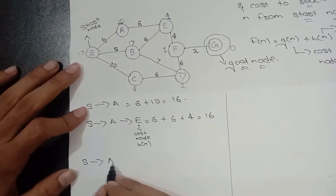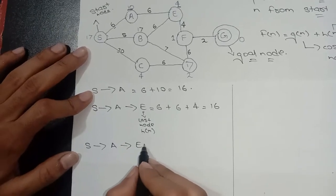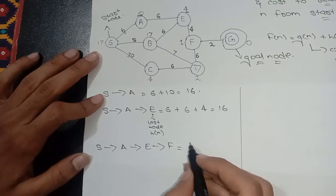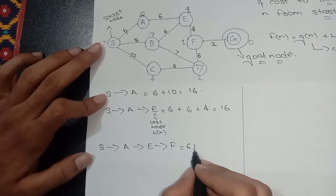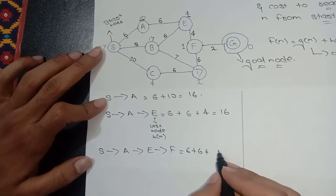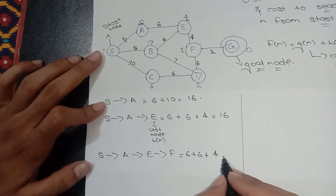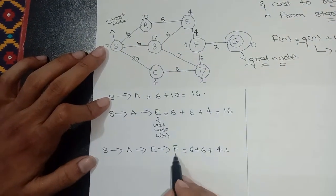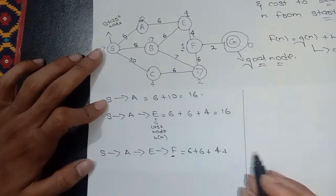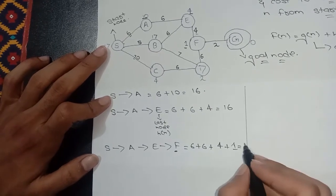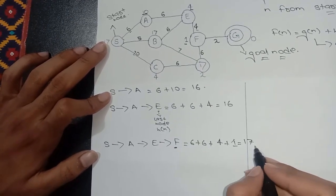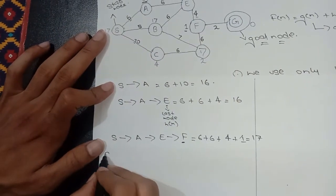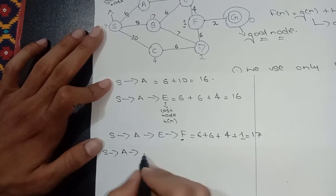Now move forward: S to A to E to F. The path cost is 6 plus 6 plus 4, and remember this 4 is the path value between E and F, not a heuristic value. F is the last node, so F's heuristic value is 1. So 6 plus 6 plus 4 plus 1 equals 17.